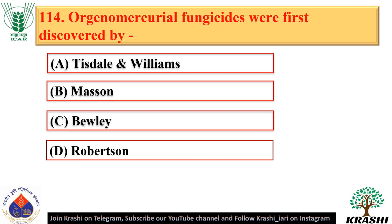Question number 114. Organomercurial fungicides were first discovered by Tisdale and Williams — option A. They discovered these in 1934.